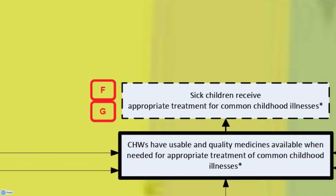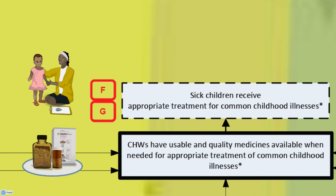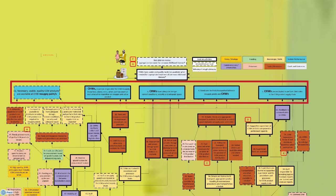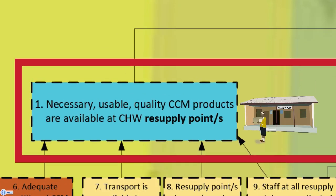The project began developing the theory of change by identifying its main objective: give sick children the right treatment for common childhood illnesses. Then SC4CCM identified the main project goal: CHWs must have usable quality medicines to treat these illnesses. SC4CCM then prioritized the five major stepping stones, or preconditions, that need to be in place to reach these goals. The first: necessary, usable, quality CCM products are available at CHW resupply points.